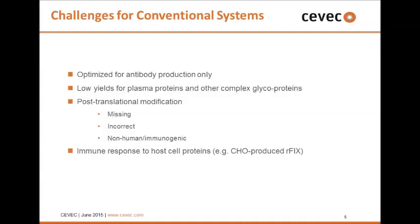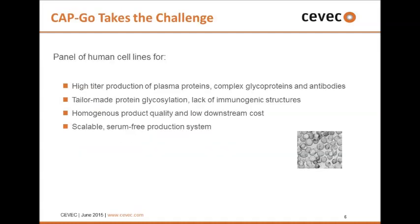There are already some examples: factor 9 produced in CHO cells, for instance, led to immune responses to Chinese hamster host cell proteins. That's why we are convinced that the human cell as a production host for biopharmaceuticals is the superior one. These CAP-GO cells allow high-titer production of plasma proteins with tailor-made glycosylation, no immunogenic structures because they are authentically human, and homogeneous product quality which can reduce downstream costs.